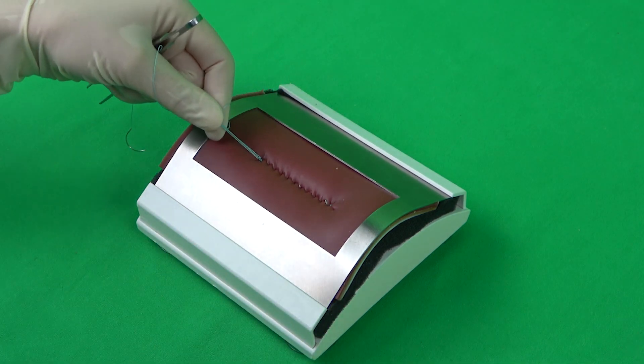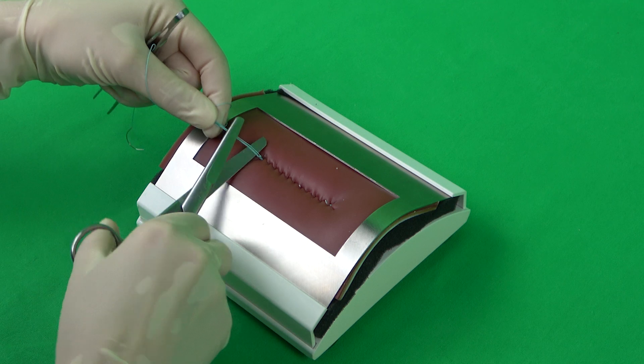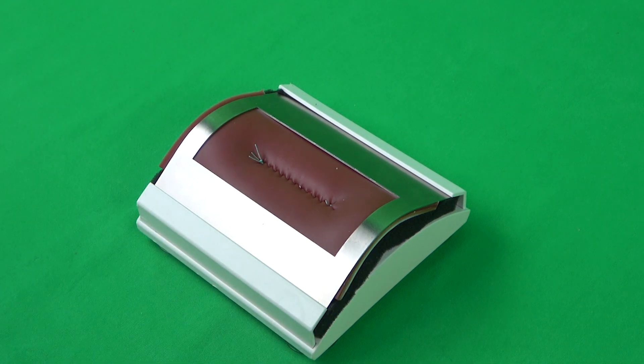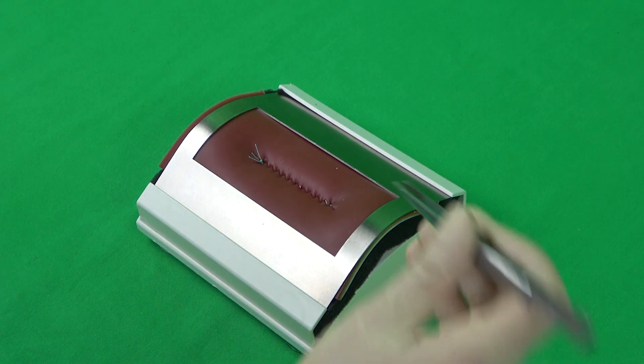The suture thread and loop are shortened to one scissors blade's width. Finally, the suture is inspected for proper closure.